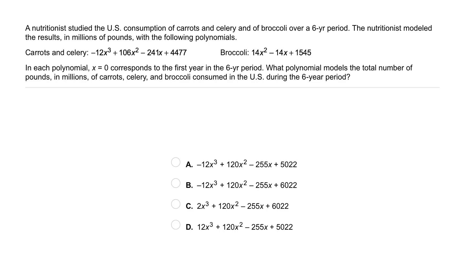Then the consumption of broccoli modeled with the polynomial 14x squared minus 14x plus 1,545. In each polynomial, x equals 0 corresponds to the first year in the six-year period. What polynomial models the total number of pounds, in millions, of carrots, celery, and broccoli consumed in the US during the six-year period?